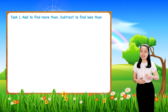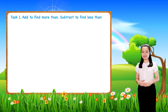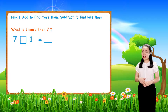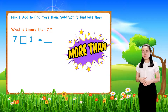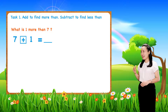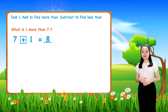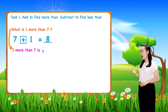Let's find the answers together. First, what is one more than seven? We can add to find more than. Here, we have seven plus one equals eight. So, one more than seven is eight.